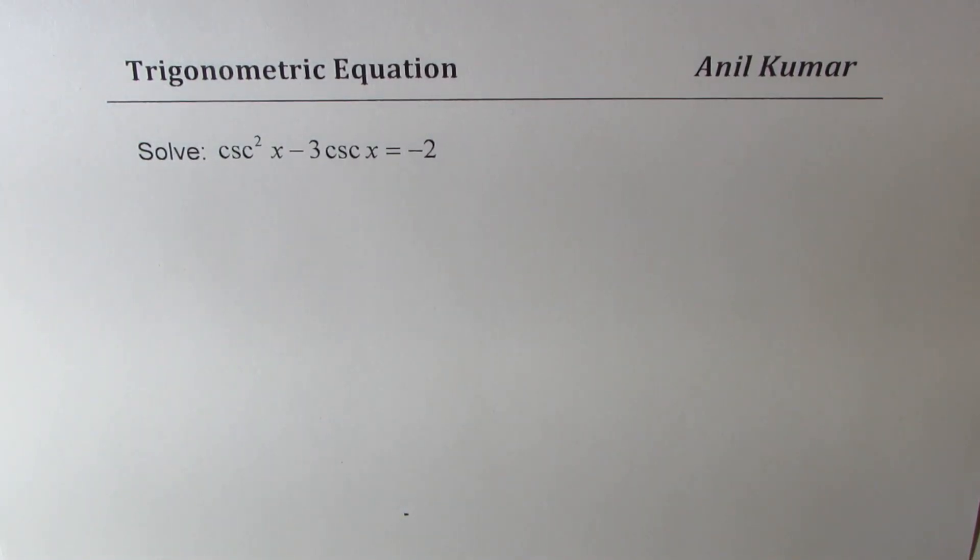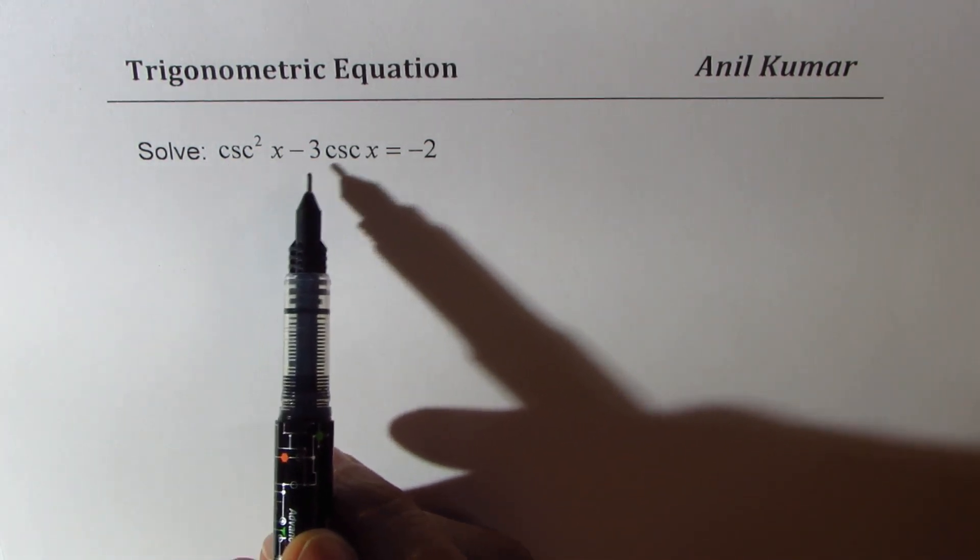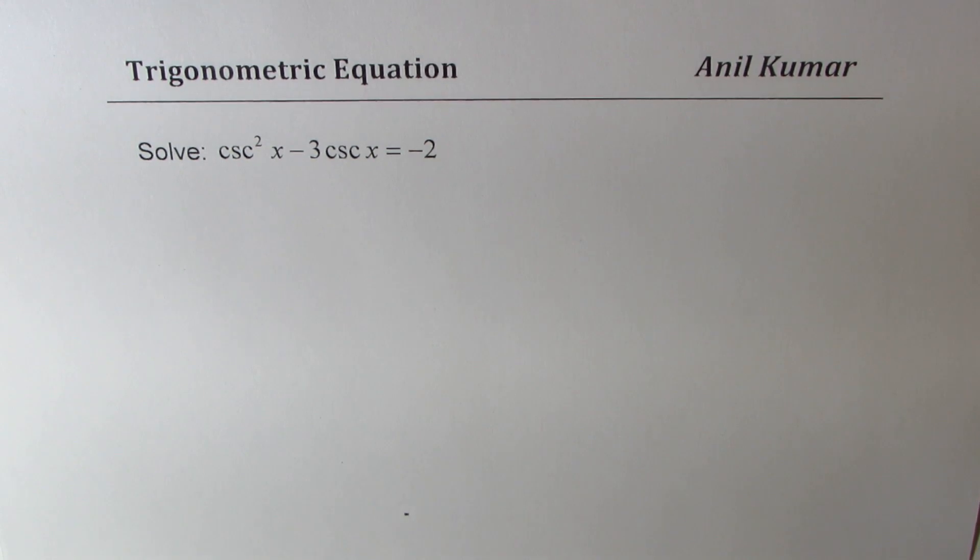I am Anil Kumar sharing with you a very important trigonometric equation. We need to solve cosecant square x minus 3 cosecant x equals minus 2.